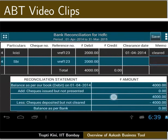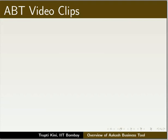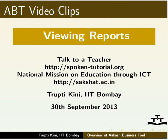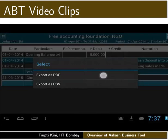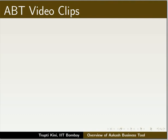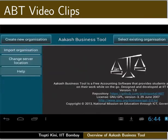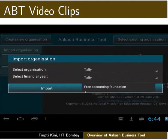Bank reconciliation statement is located at the bottom of the table. We can even export a report to PDF as well as CSV formats using ABT. Tap on export as PDF option. A new window appears. You can secure your file by giving it a password, then tap on set password and save file button. Using ABT we can export an organization's data from one rooted tablet to another. Tap on import organization. It will show all available exported organizations and financial years to be imported.